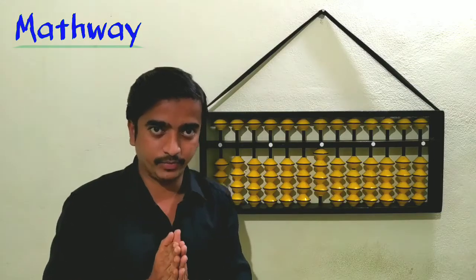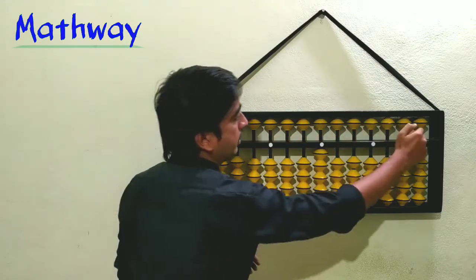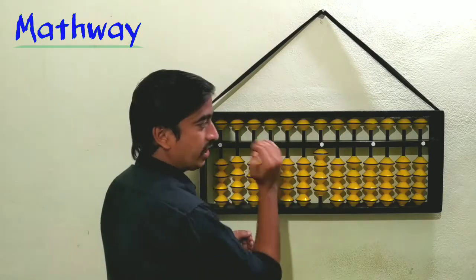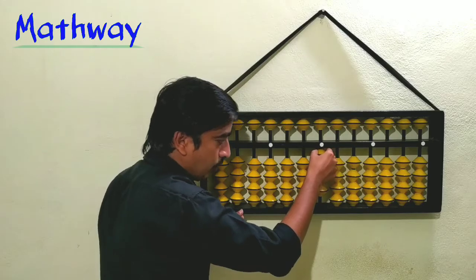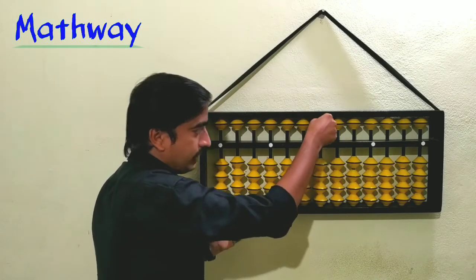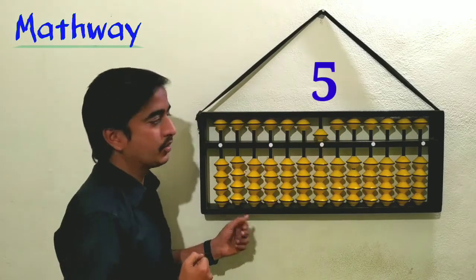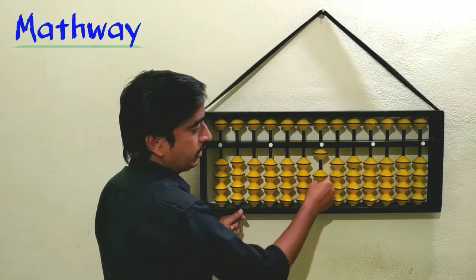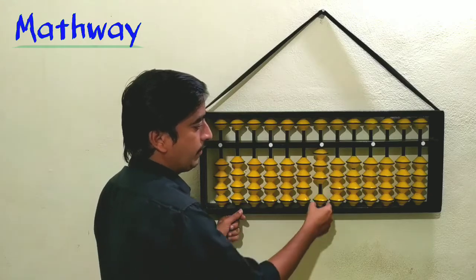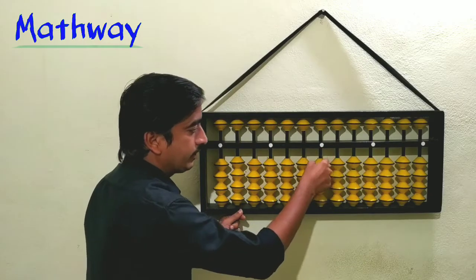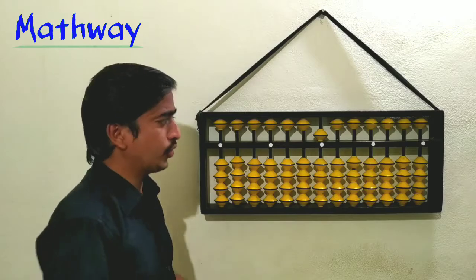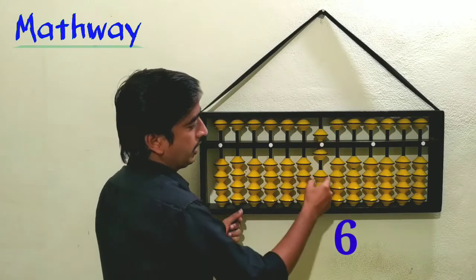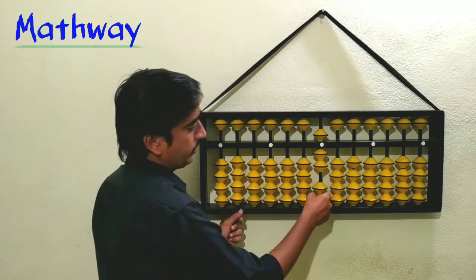To represent five: the upper bead represents five, fifty, five hundred, and so on depending on the rod. To represent five, bring the upper bead down so it touches the answer line — that is five. To represent six: five plus one lower bead. Seven is five plus two, eight is five plus three, and nine is five plus four.